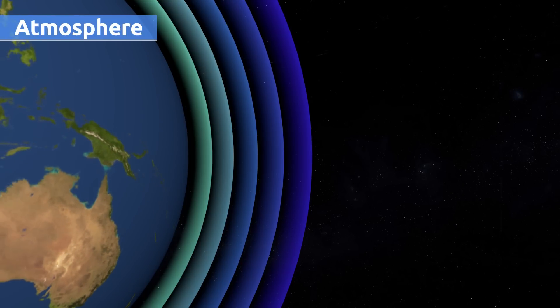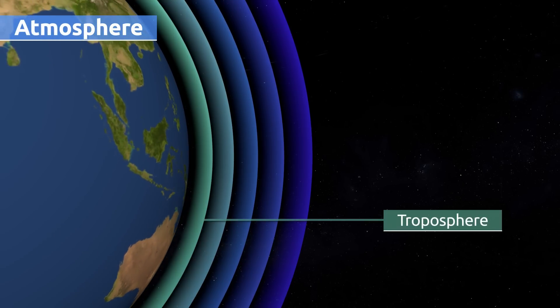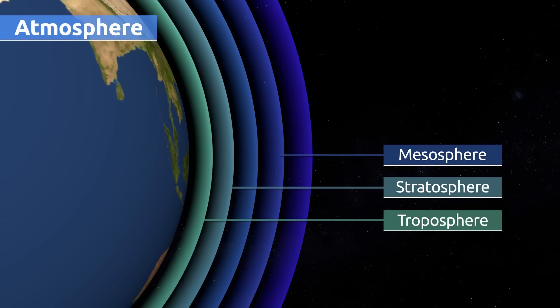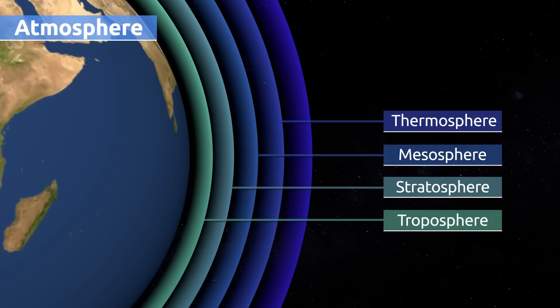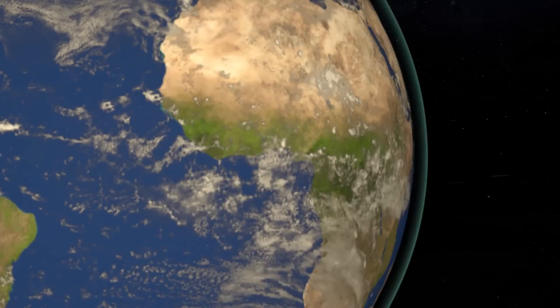The atmosphere is divided into five main layers: the troposphere, the stratosphere, the mesosphere, the thermosphere, and the exosphere.